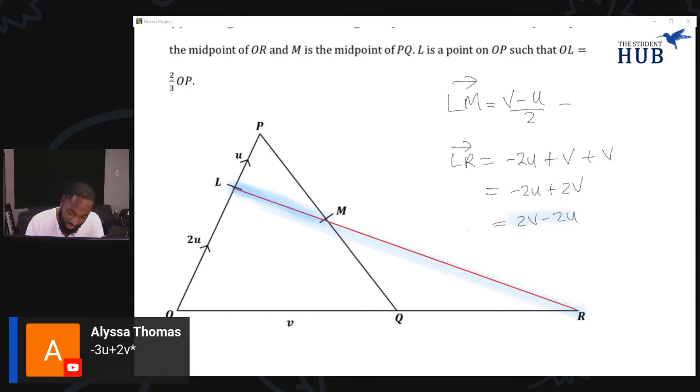So this is negative 2u plus 2v. I can rewrite this as 2v minus 2u. Immediately we figured out that LR is 2v minus 2u and LM is - another way I can write this so you can see clearly what's happening - half of (v minus u). Another way I can write this is 2(v minus u). From this we can clearly see that LM and LR are related to each other by a scalar factor.